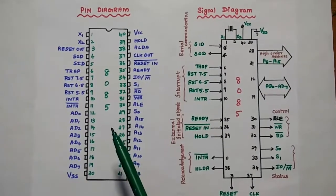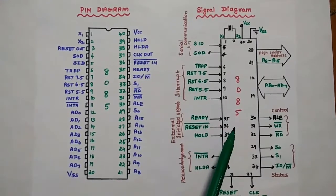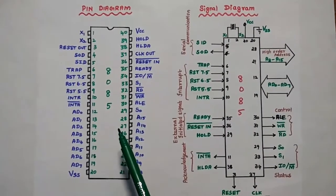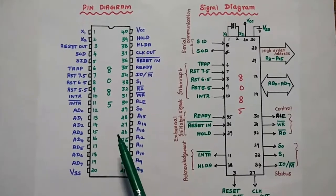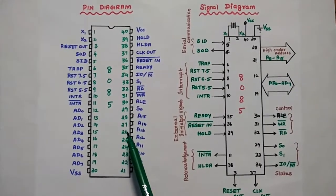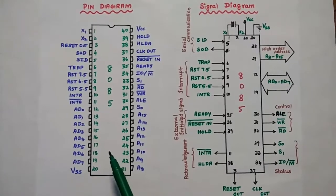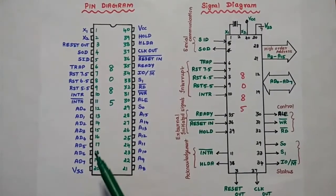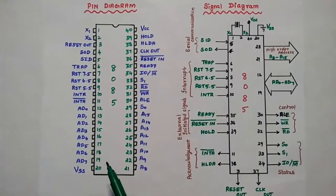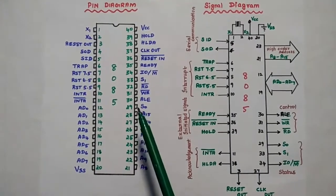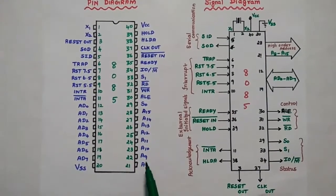This is the pin diagram of 8085, and this is the signal diagram. As we know, 8085 is available as a 40-pin dual inline package IC. This pin diagram has 40 pins: pins 1 to 20 on the left-hand side from top to bottom, and pins 21 to 40 on the right-hand side from bottom to top.